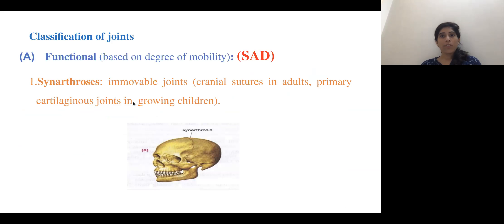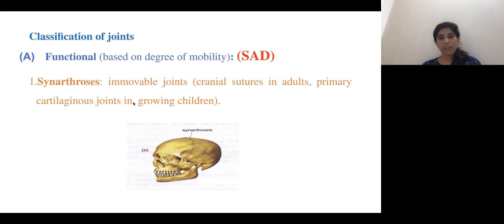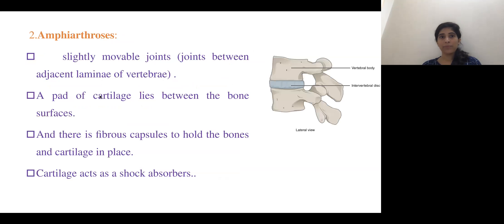Synarthrosis is an almost immovable type of joint. Cranial sutures of the skull and the cartilaginous joints in growing children are examples of this type.